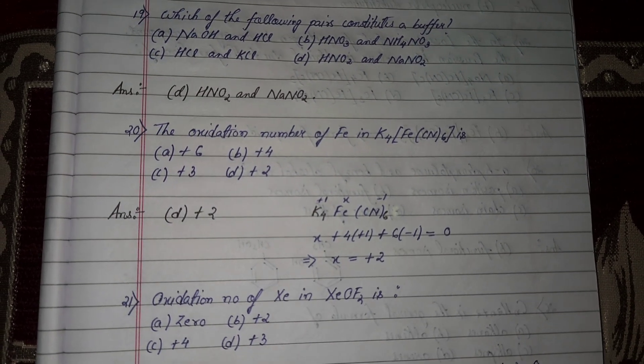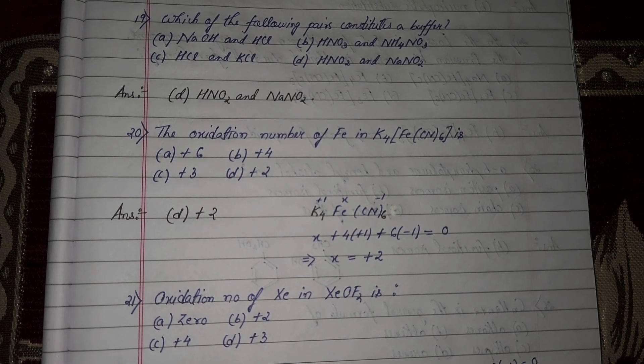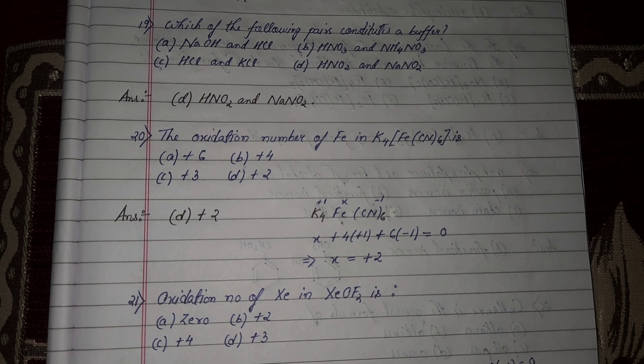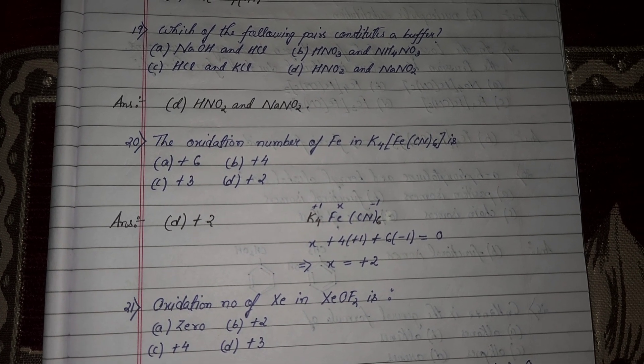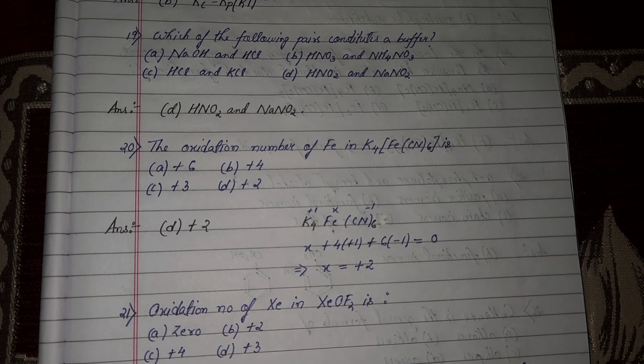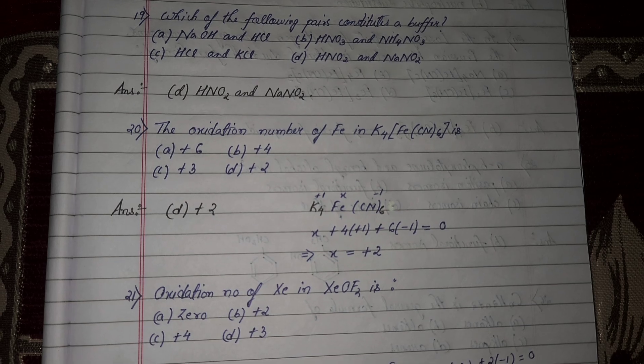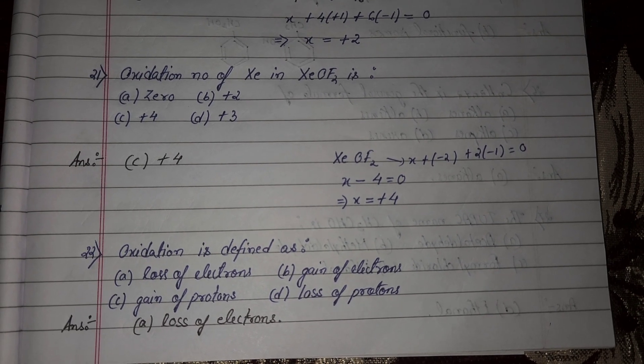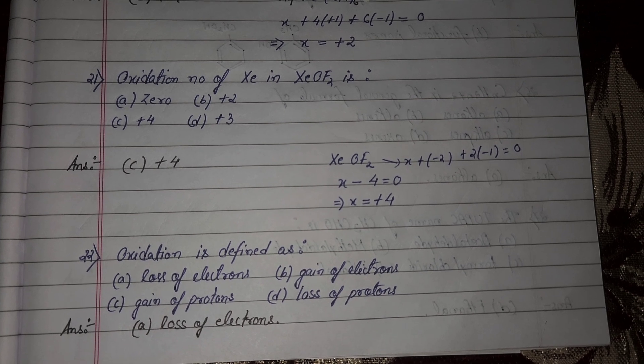Next question number 20, the oxidation number of iron in K4 Fe CN6 is plus 2. 4 into oxidation state plus 1 plus 6 into cyanide oxidation state minus 1 equal to 0, so X equal to plus 2.